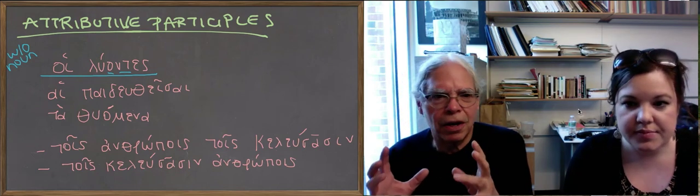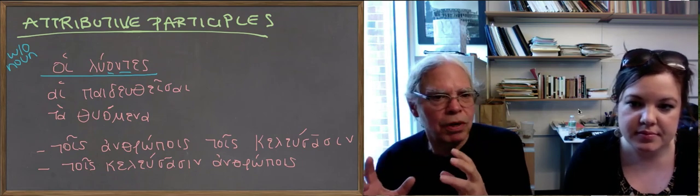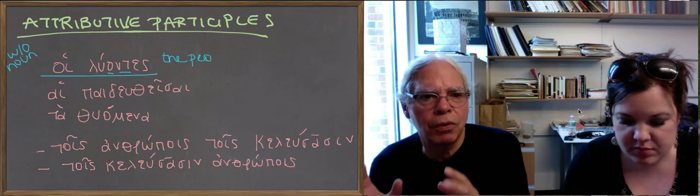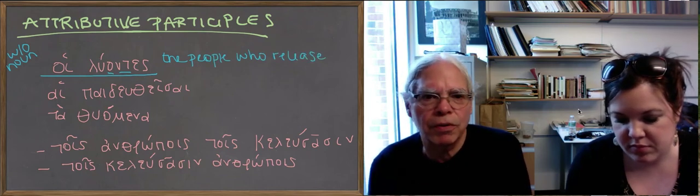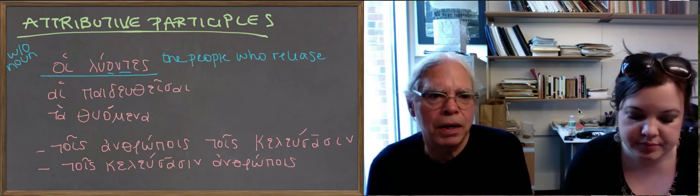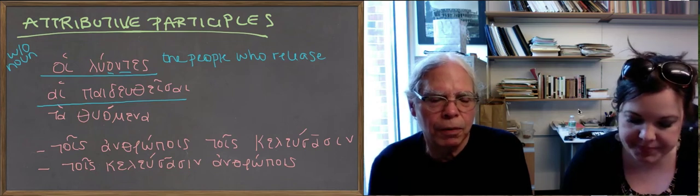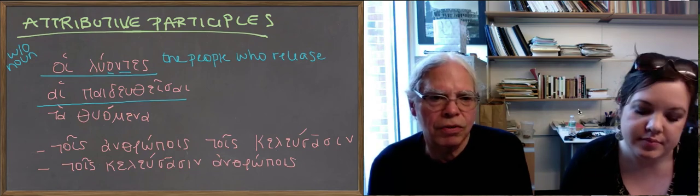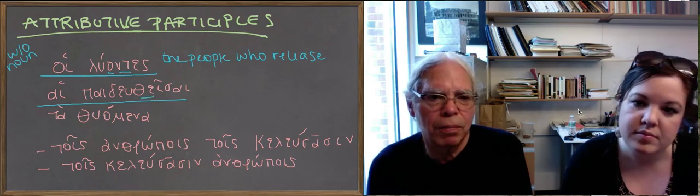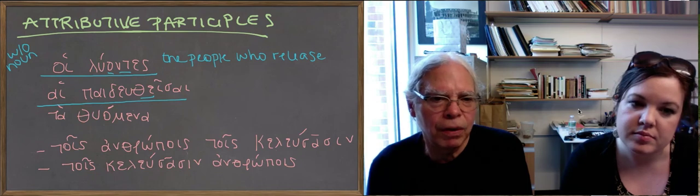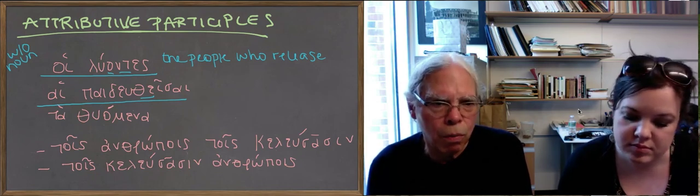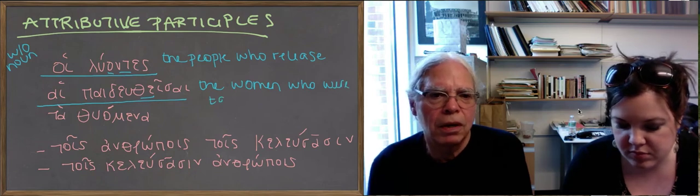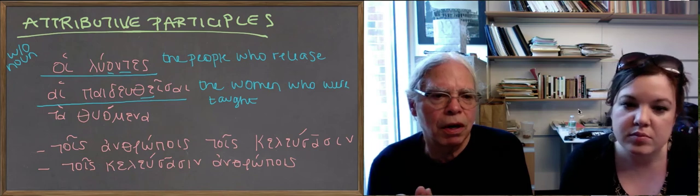Here's the key concept: attributive participles are best and most simply translated like short relative clauses. So *hoi luontes* means 'the people who release,' 'those who release,' or 'the men who release.' Looking at the next example, *hai paideuttheisai*: we've got another nominative plural article, this one feminine, and the participle is built on *paideu-* plus *-the-*, which is the sign of the aorist passive. That's the aorist passive participle in the nominative plural feminine, so this means 'the women who were taught.'